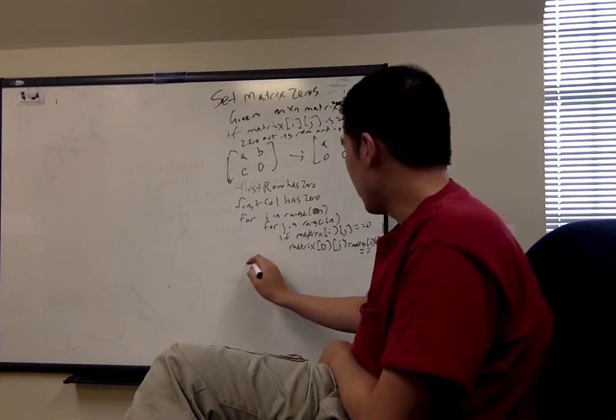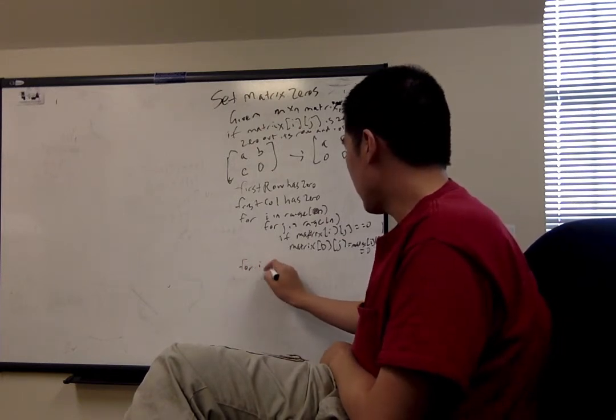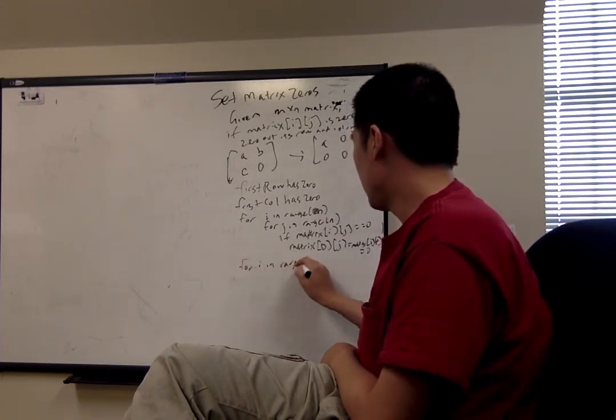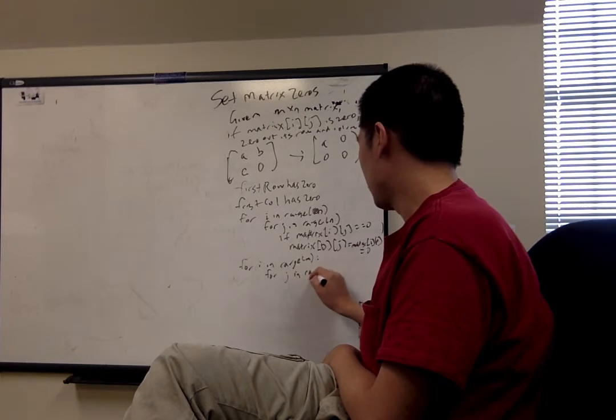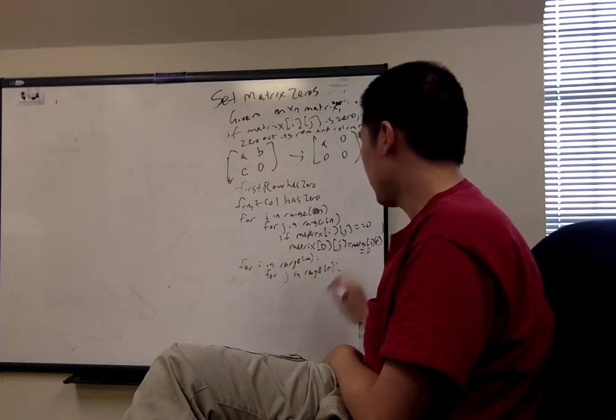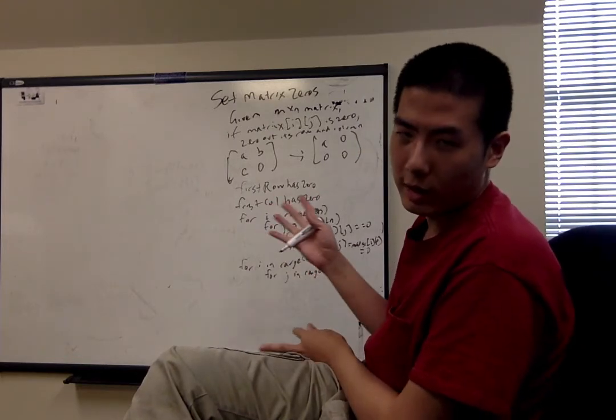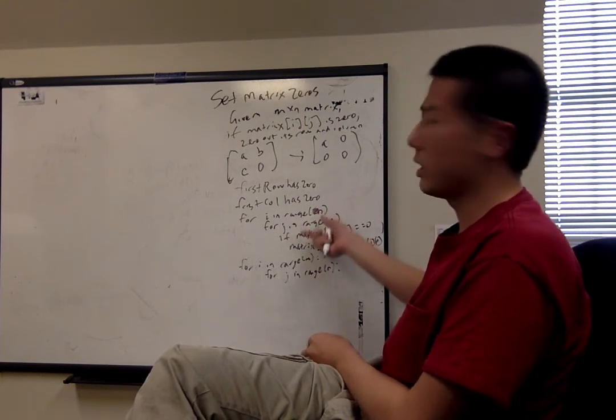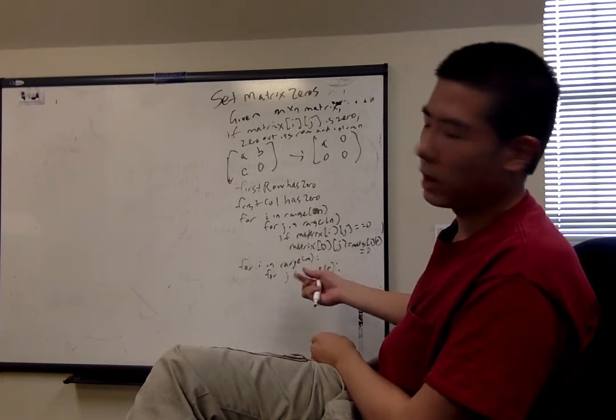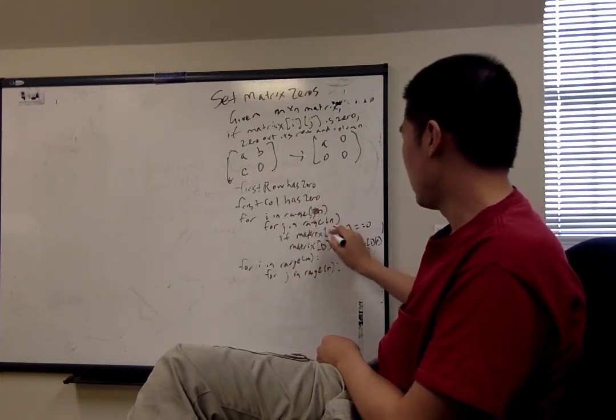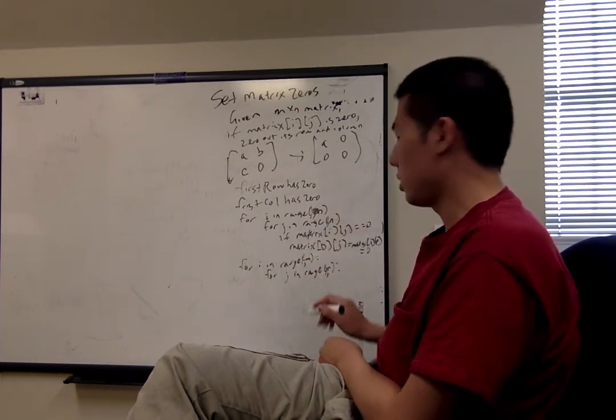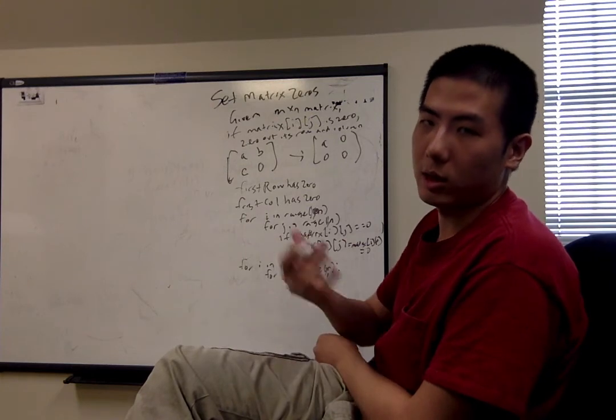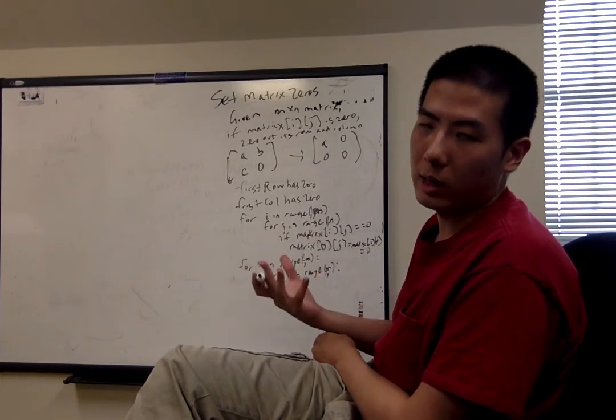And then we want to repeat the process. Now we want to iterate across all elements in the matrix. One small detail that I've neglected to mention here is that technically you don't want to iterate over the first row and column, so you want to start the range function at one for both of these. And the reason is that we're using the first row and column as a placeholder for the logic of our function.